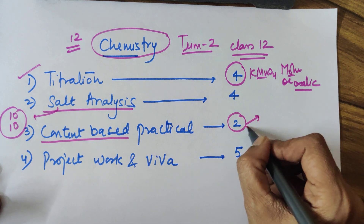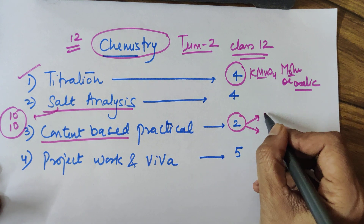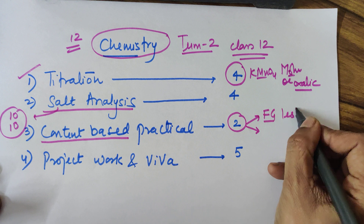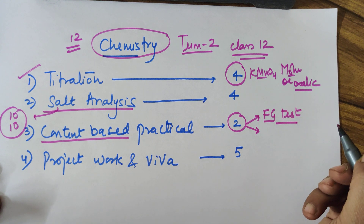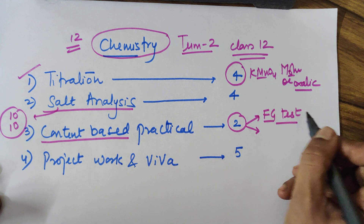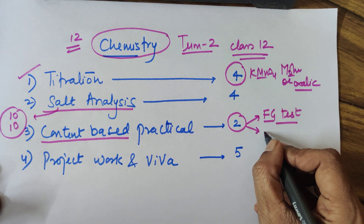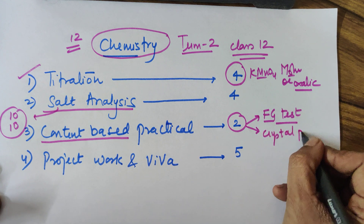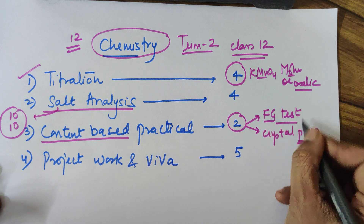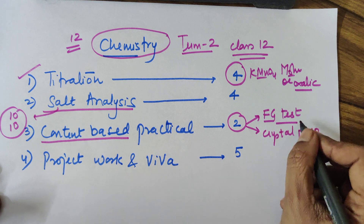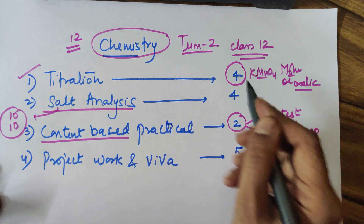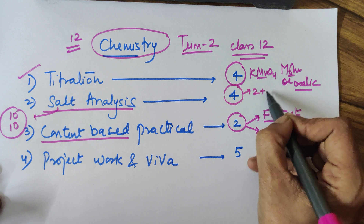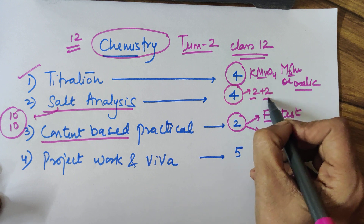Thirdly, there is something called a content-based practical — it is only two marks. The content-based practicals are your functional group test (what type of functional group is present in the given organic compound) and the second is your crystal preparation for a double salt. Both videos are already on the channel. So the four marks for salt analysis would be two for anion and two for cation.